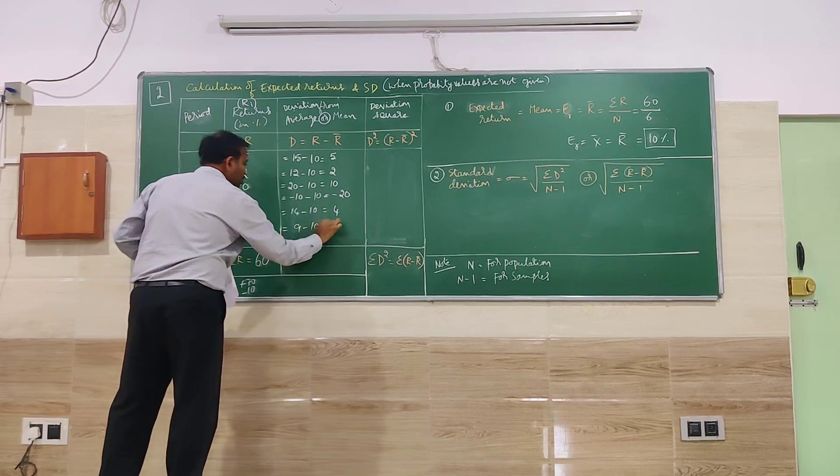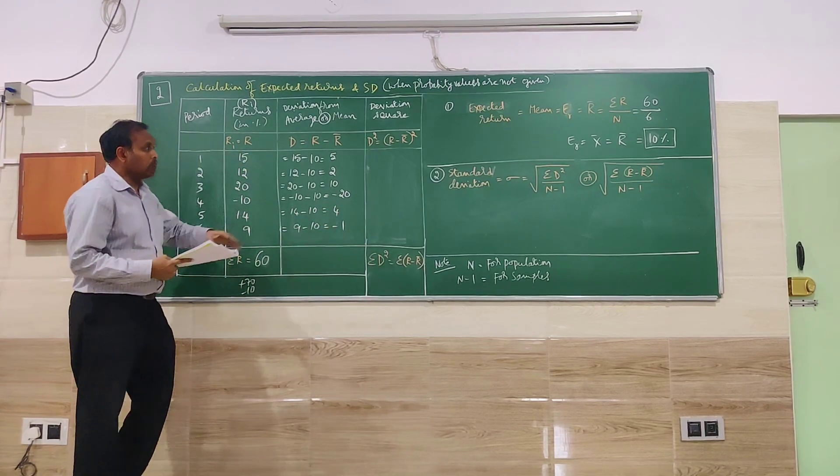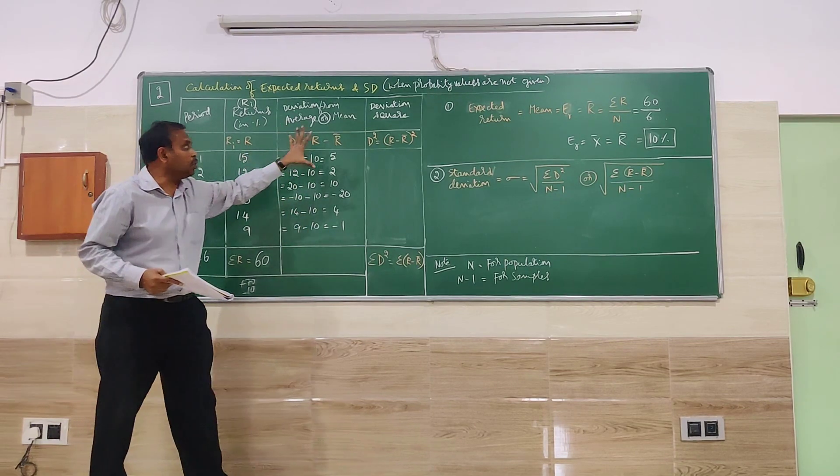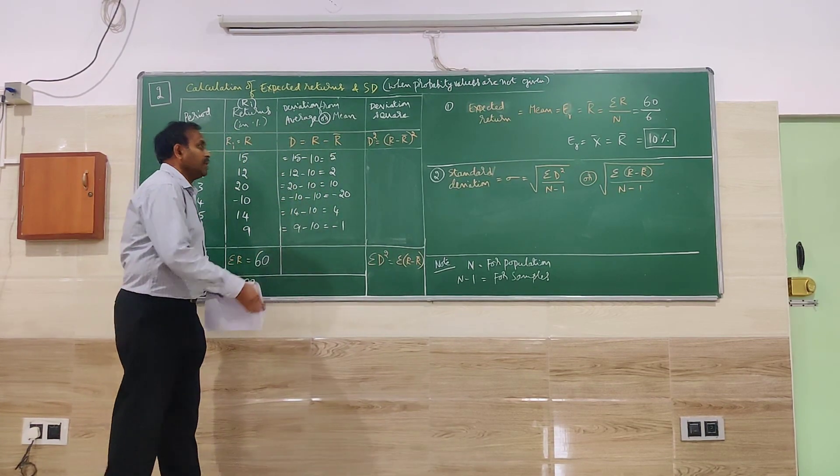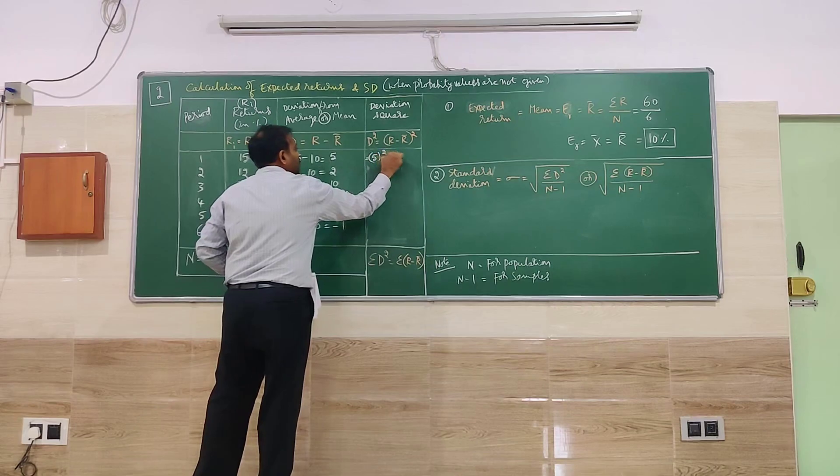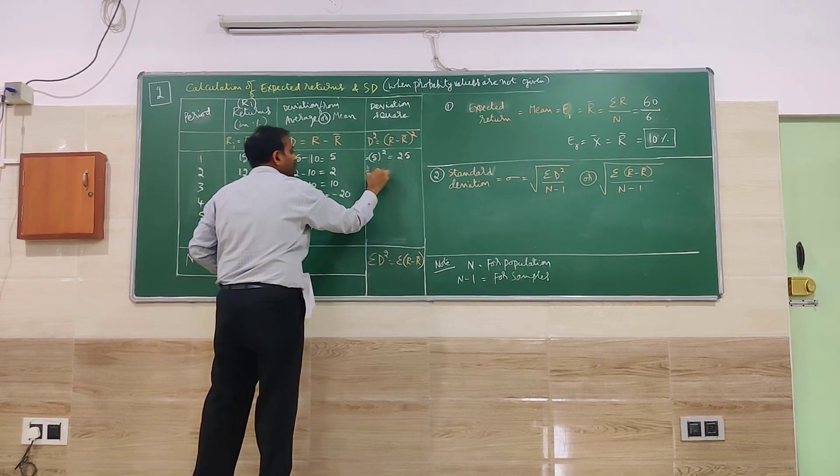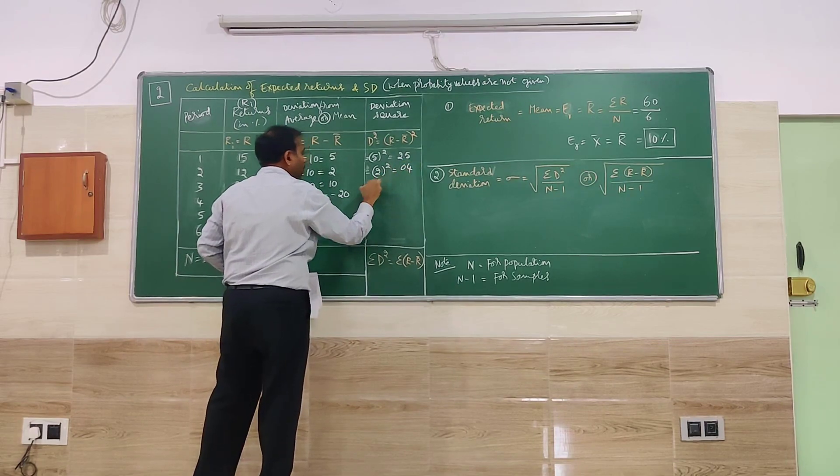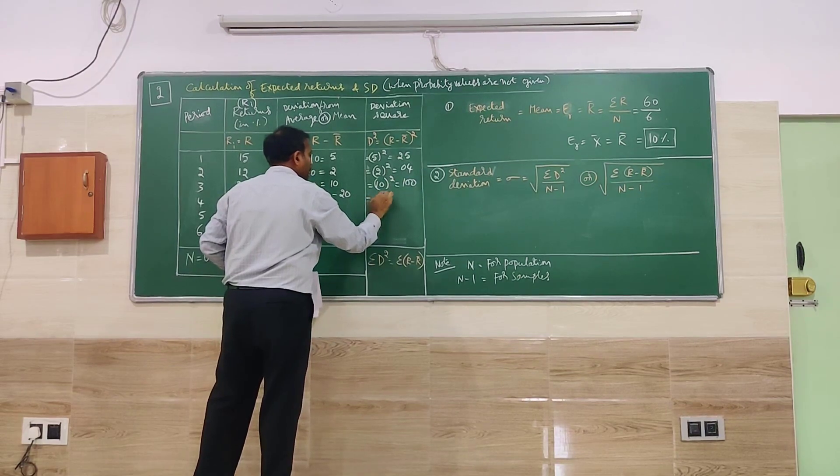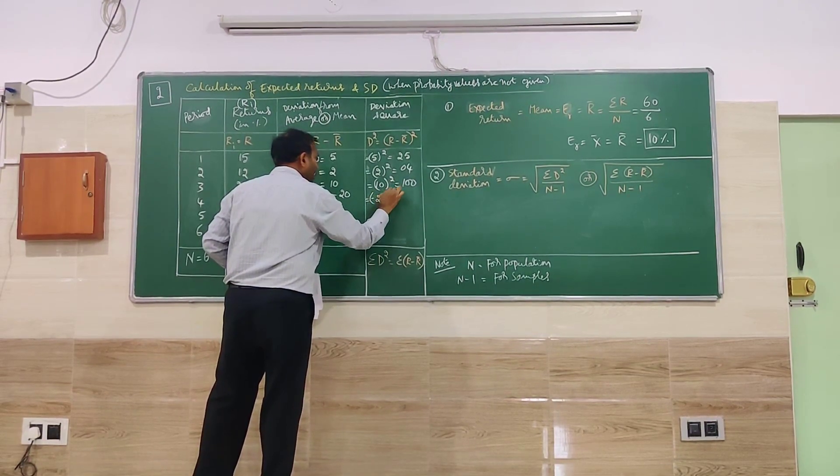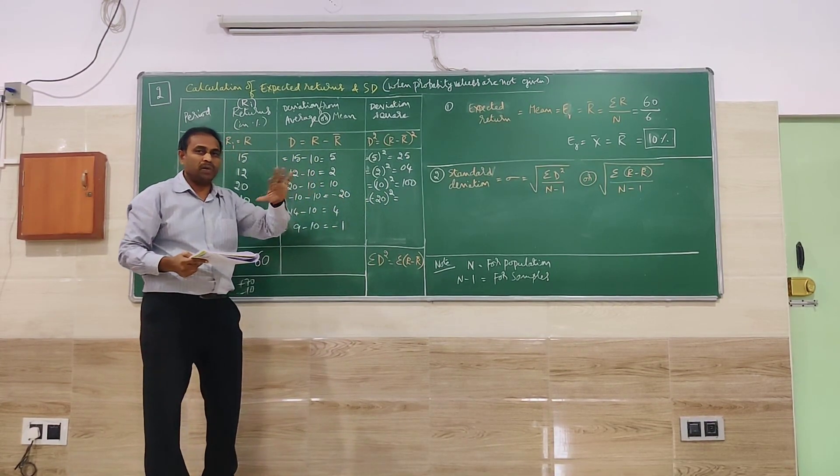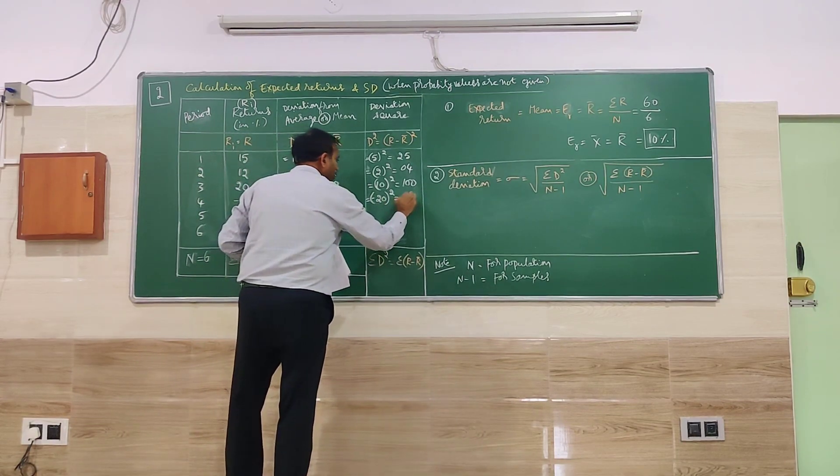9 minus 10 is equal to minus 1. So no need of totaling the deviations, that is the D column. No need to total. We have to square the deviations. So square the deviations means D square. D is 5, 5 square, that is 25. 2 square, that is 4. 10 square, that is 100.